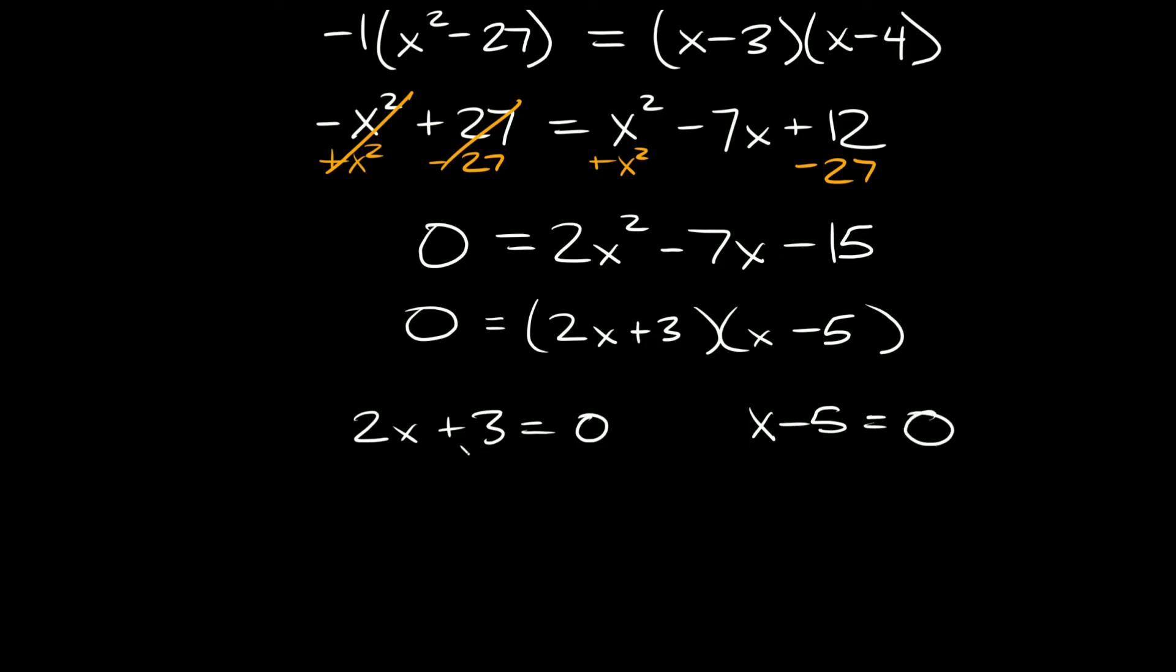To solve for x we can subtract 3 from both sides. So we get 2x equals negative 3, and then we can divide both sides by 2. So we get that x equals negative 3 halves.